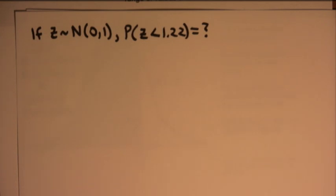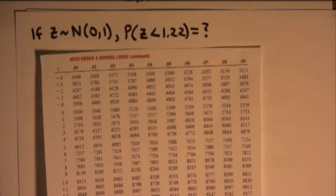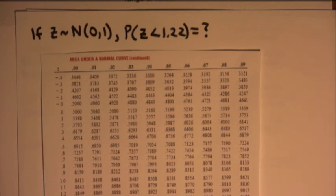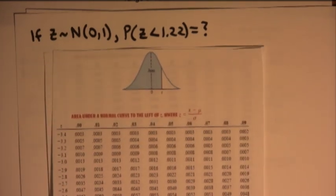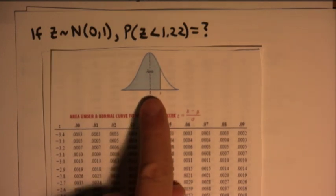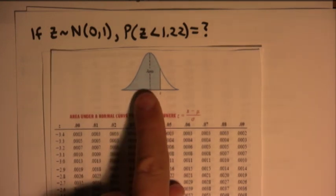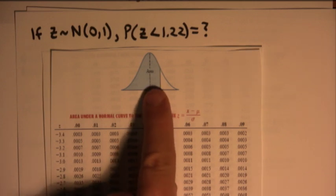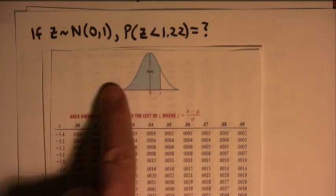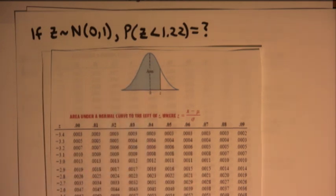The standard normal table has these values of z tabled. So if I want to know, they also give you the probability that z is less than whatever the value is. They're tabled as cumulative probabilities. In other words, when you look up z, what you're really finding is a probability that z is less than whatever that value is. So their table is cumulative probabilities.